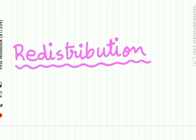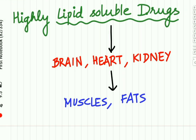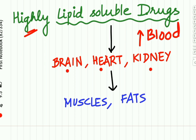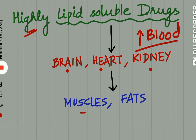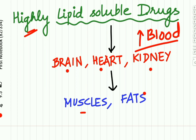Let us understand the important concept of redistribution. Highly lipid soluble drugs, when they enter the body, are first distributed to organs having high blood flow — the brain, heart, and kidney. From these highly perfused organs, the drug then enters into the less vascular tissues of the body, such as the muscles and fat. This transfer of drugs from the brain, heart, and kidney to tissues of lower vascularity is called redistribution.